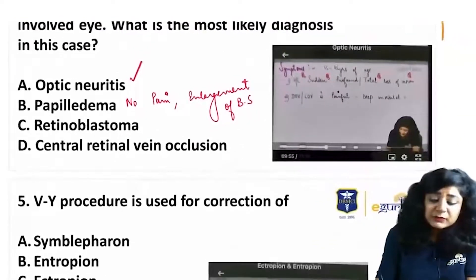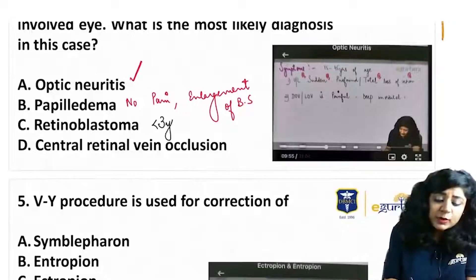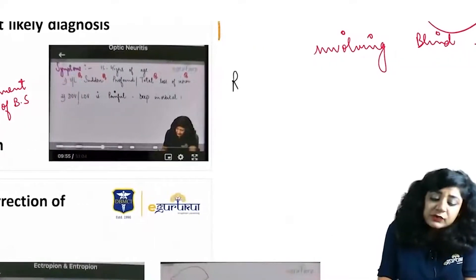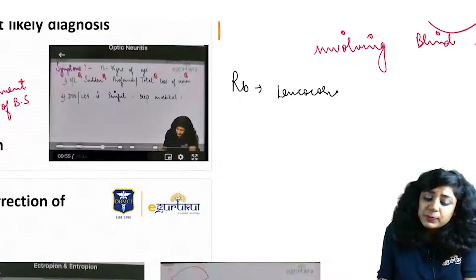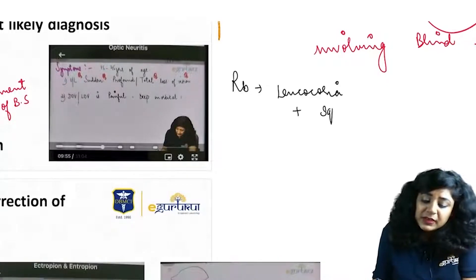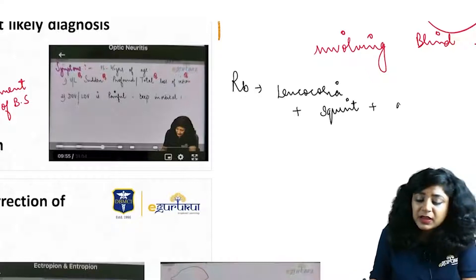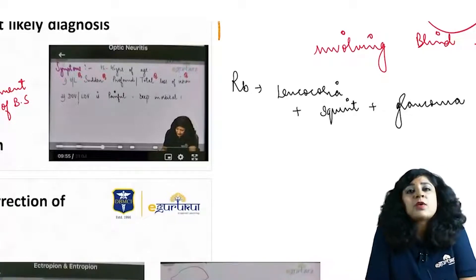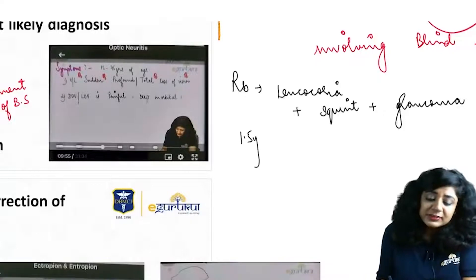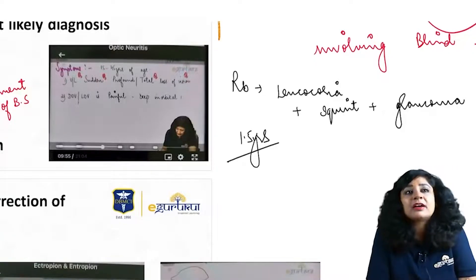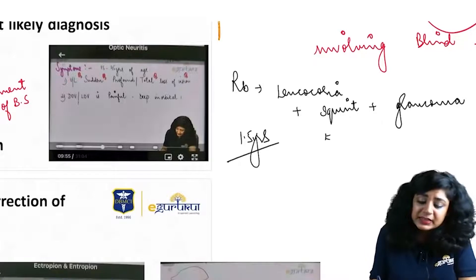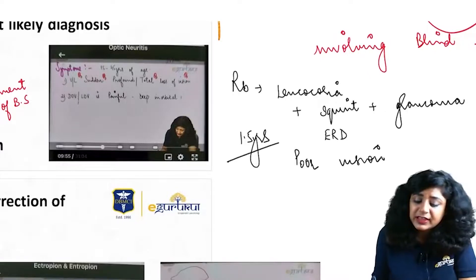For retinoblastoma, the patient's age should be less than three years — most common age of diagnosis being one and a half years. The most common presentations are leukocoria (whitish pupillary reflex), squint (mostly convergence squint), glaucoma, and nystagmus. Poor vision along with these features are required for the diagnosis of retinoblastoma. So it's not retinoblastoma in this case.